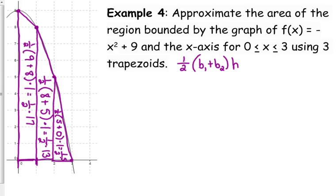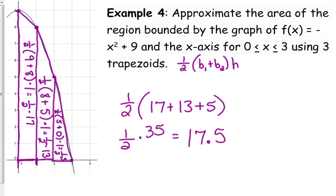So notice all these end up with 1 half again. So we're getting ready to add them all together. So we can factor out that 1 half. We had 1 half times 17, 1 half times 13, and 1 half times 5. So we can factor out the 1 half. So we get 1 half times 35, which is 17.5.